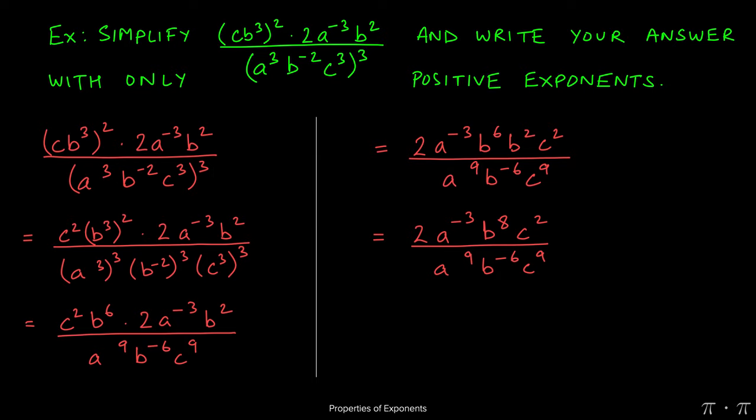At this stage, there is no rearrangement or simplification that can be done with just the numerator and just the denominator, so we start using the quotient rule.